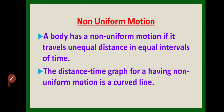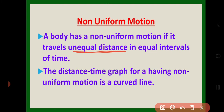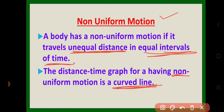What is non-uniform motion? Non-uniform motion is a motion in which unequal distance is travelled by an object in equal intervals of time. The time intervals are equal but the distances are unequal, so the distance-time graph for non-uniform motion is always a curved line, because speed is increasing or decreasing.